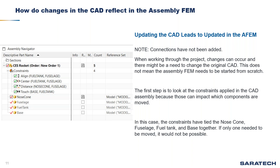This leads us to how changes in the CAD reflect in the assembly FEM. When working on projects there are always going to be changes — whether as simple as moving a component or as complex as changing the entire design. This does not mean we need to start the assembly FEM from scratch. Instead, we go back into the CAD assembly and make the changes there, which we update later in the assembly FEM. In this case, we'll look at moving one component from one location to another, and the first step is to examine the constraints applied in the CAD assembly.